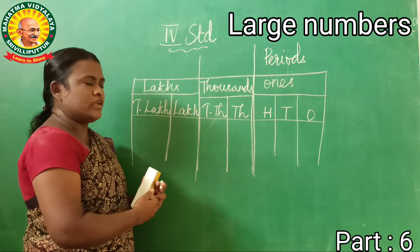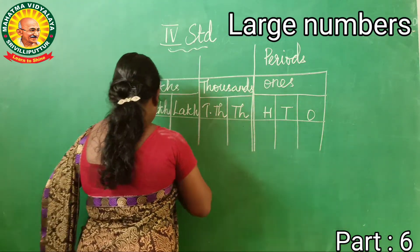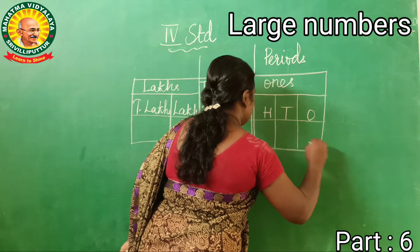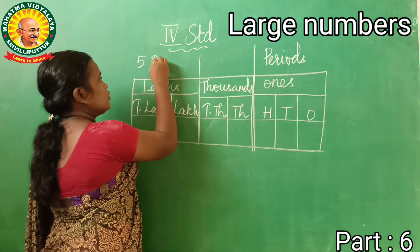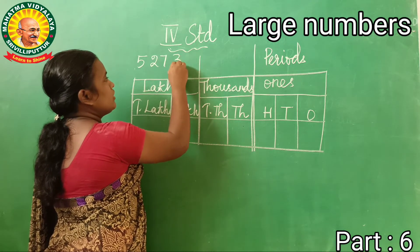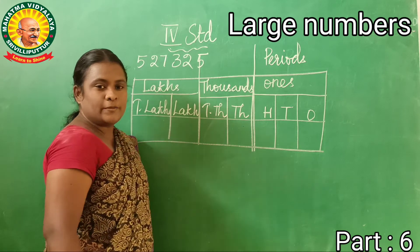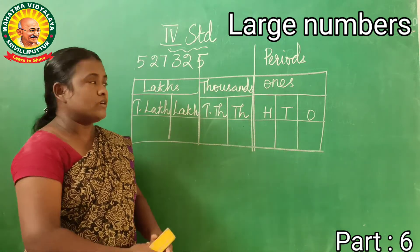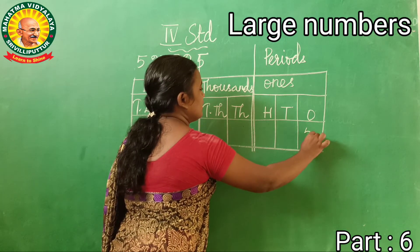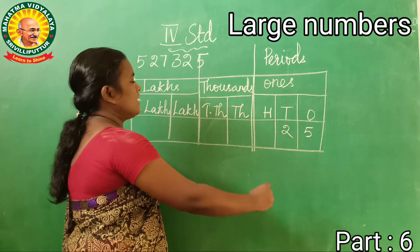Now I am going to give an example. The number is five lakhs, twenty-seven thousand, three hundred and twenty-five. Now we are going to write the numbers in the place value chart. One place? Five. Very good. Next one is two.